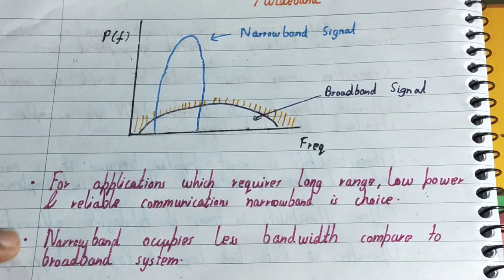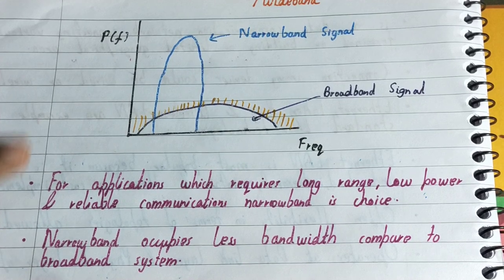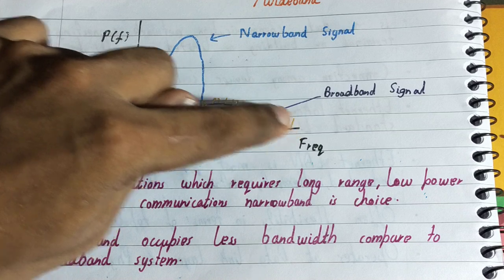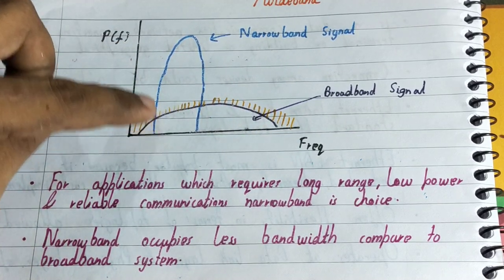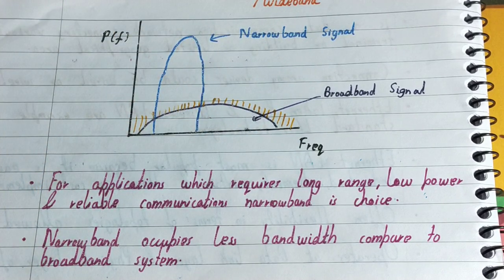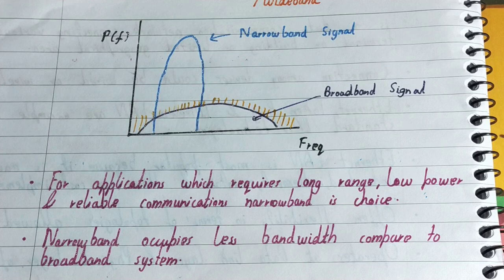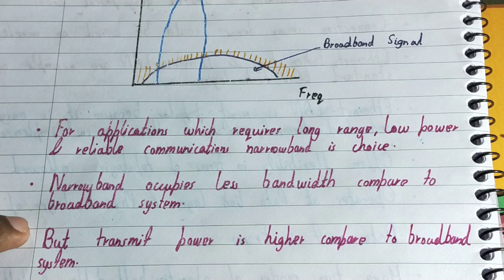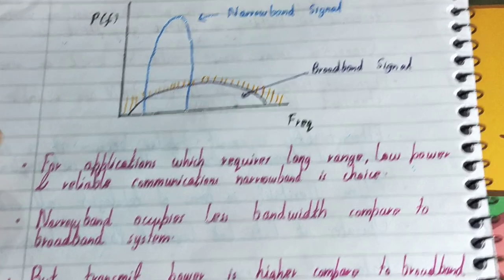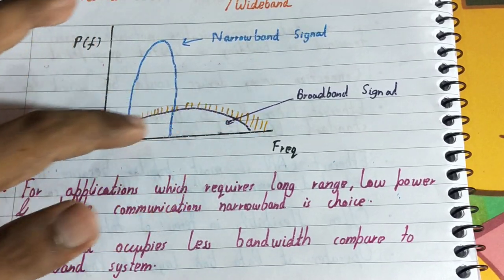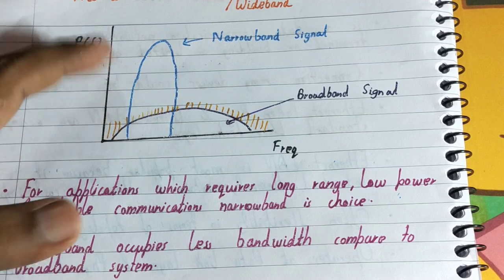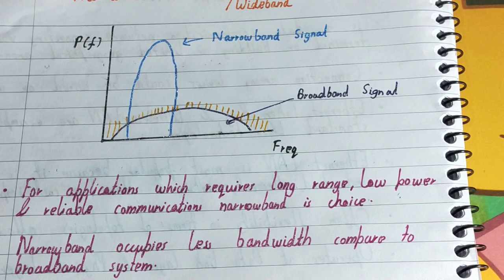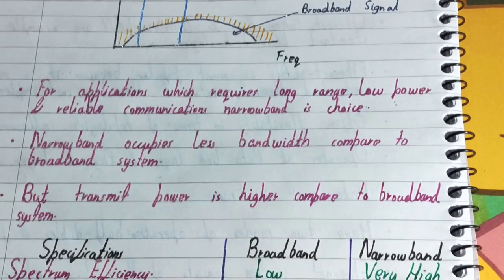Narrowband occupies less bandwidth compared to a broadband system, as you can see in the diagram — there is a huge difference between them. However, the transmit power of narrowband is higher compared to broadband. Broadband has very low transmit power, while narrowband has very high transmit power.